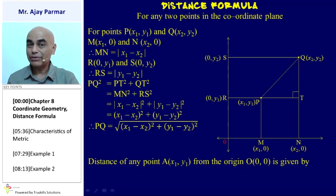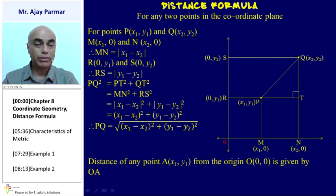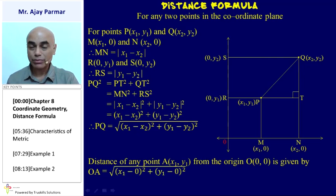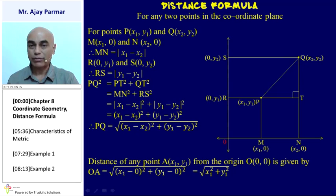If a point A(x1, y1) and its distance from the origin (0, 0) is to be found, using the same formula: OA = √[(x1 − 0)² + (y1 − 0)²] = √(x1² + y1²).